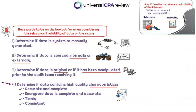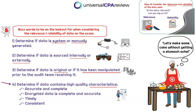We want to know what makes good data here — we're going to determine if the data contains high-quality characteristics. There are four things you generally need to know: you want to know if the data is accurate and complete — accurate data is better than inaccurate data, complete data is better than incomplete data. If the data is encrypted, we need to confirm it is complete and accurate. We also want to make sure that the data is timely and consistent — we don't want any crazy outliers. This is like determining whether our eggs and cream butter are of high quality before we give ourselves a stomachache.